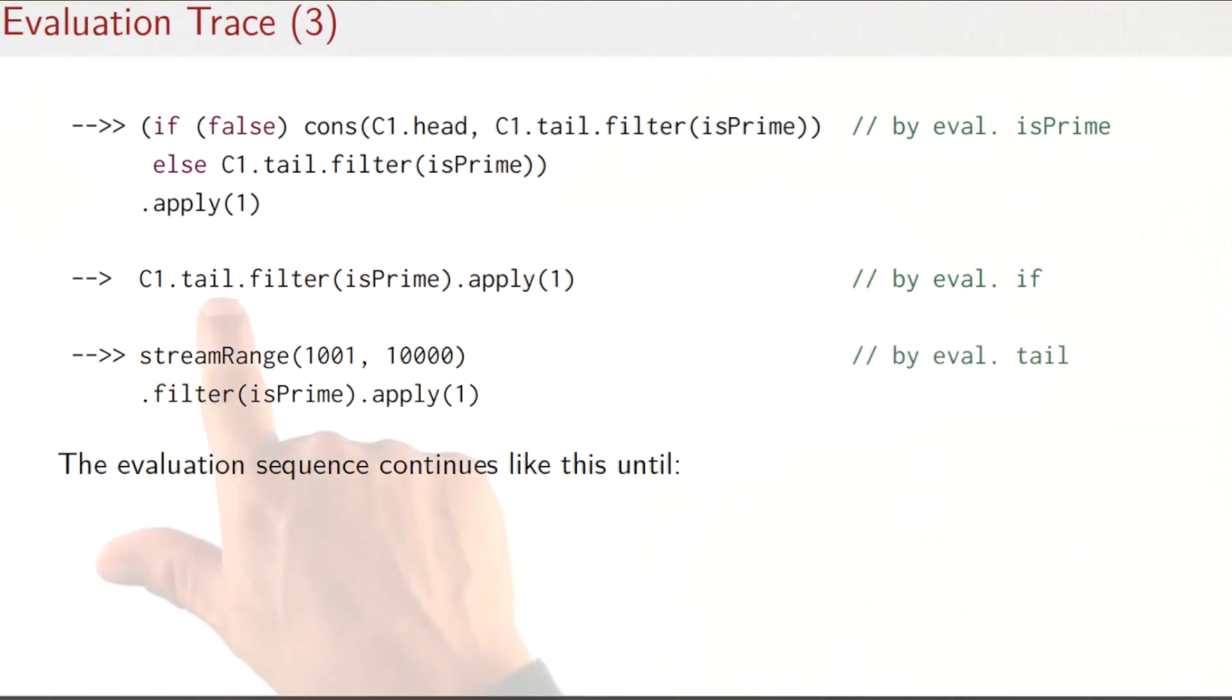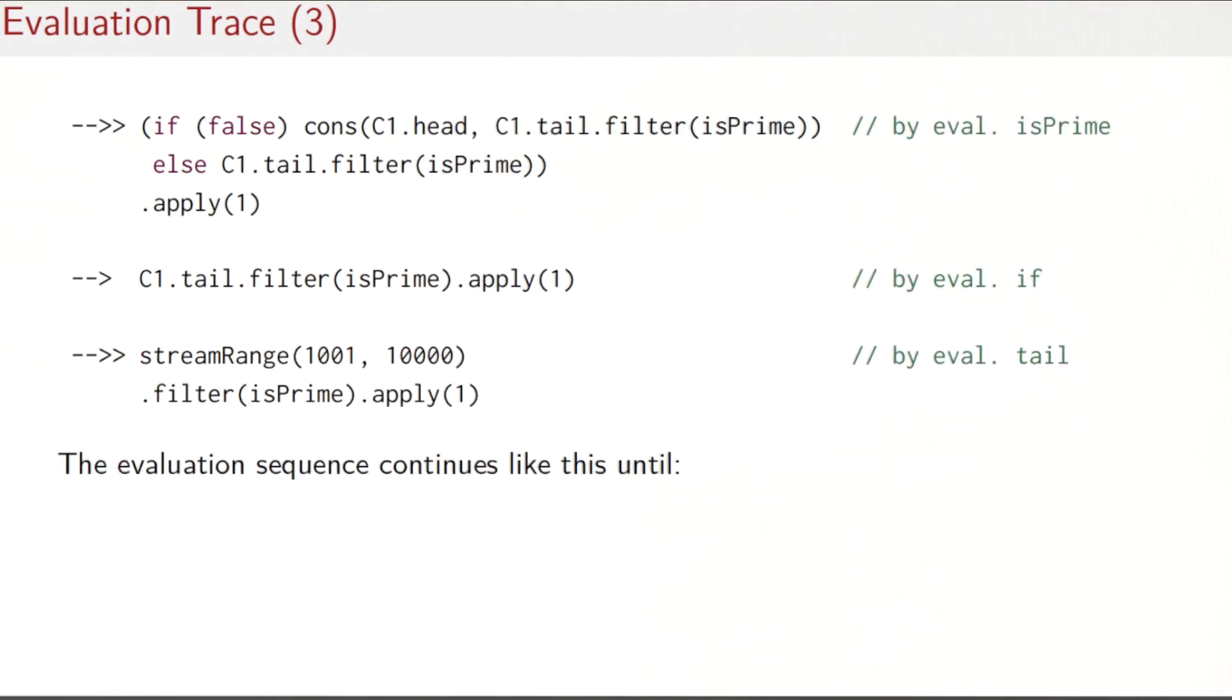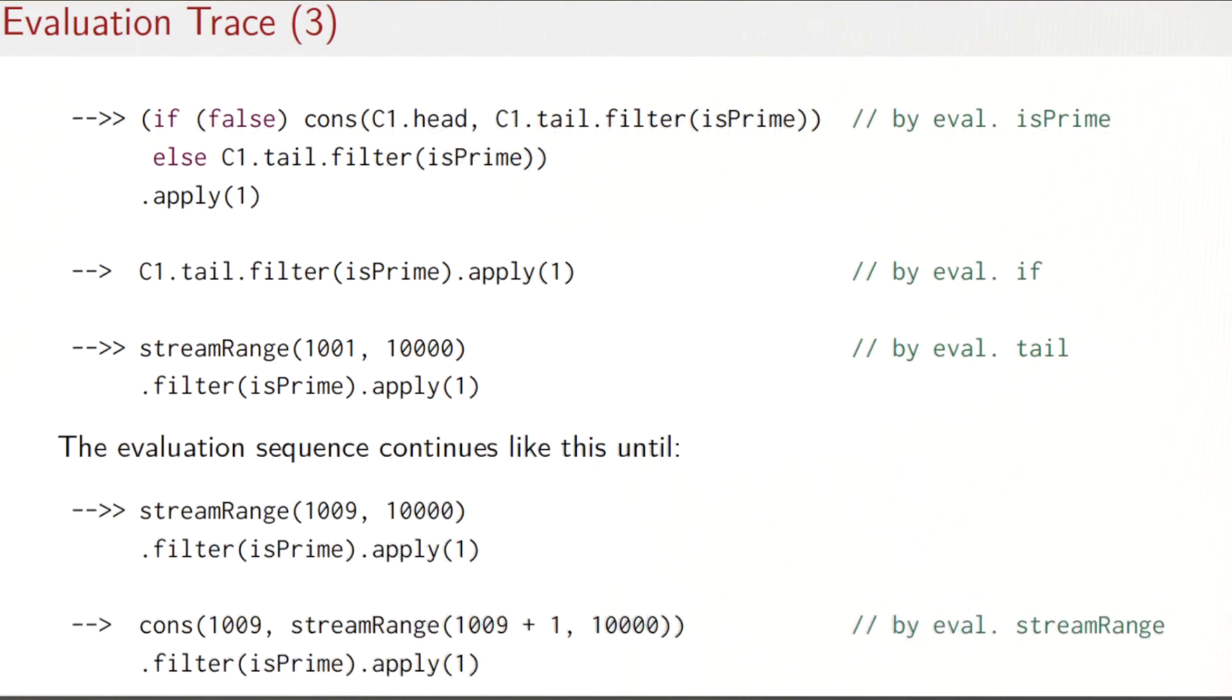I evaluate the if, which gives me this expression here. And I've evaluated the tail of the C1 constant. Now if you go back to the C1 constant, what it was—it was a cons with the streamRange expression. So when I evaluate the tail, that's what I will get. But what I'm left with is the expression streamRange(1001, 10000) and then the same thing as filter(isPrime).apply(1). In other words, the same expression I started with, only instead of 1000 I have 1001 here. And that evaluation sequence continues until I hit the first prime number, which in this case would be 1009.